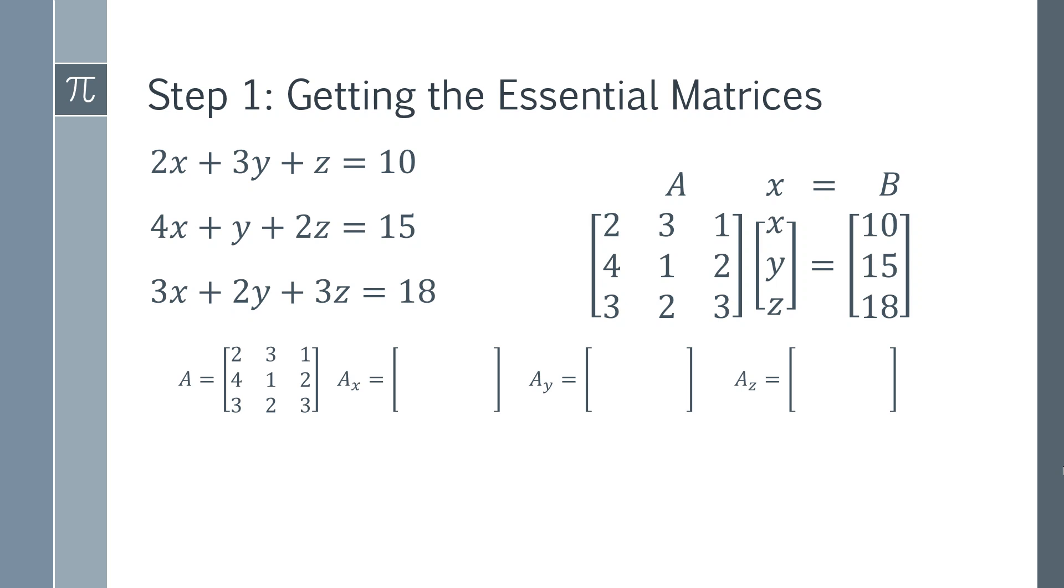So if we want the Ax matrix I'm going to replace all of the first column, which I think of as my x column, and I'm going to replace that with the contents of B. Then I'm going to fill in the remainder of the matrix with everything that's left in A.